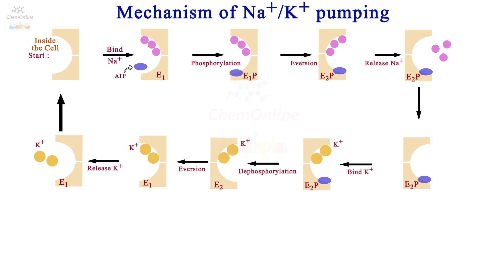The outer surface of the cell membrane becomes positively charged because for every three sodium ions exported, only two K+ ions are imported. This is how the sodium potassium pump transports sodium and potassium ions across the cell membrane.